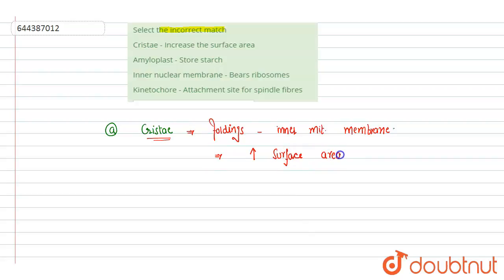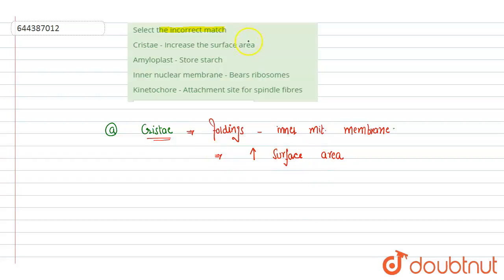This increased surface area helps in more metabolic activity, because in mitochondria a lot of metabolic activities are going on. The presence of cristae helps to undergo various activities effectively. So this is a correct match, but since we have to choose the incorrect one, this is not our answer.